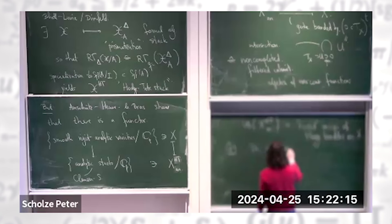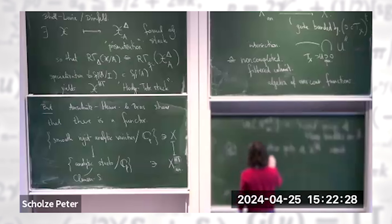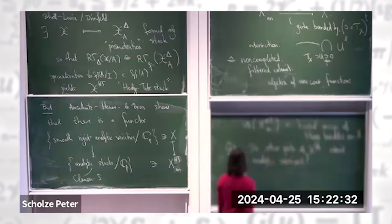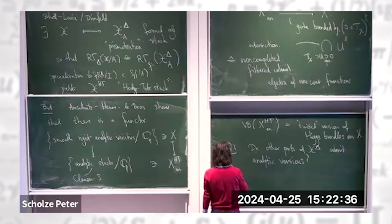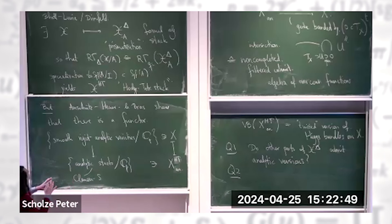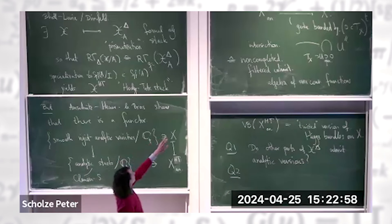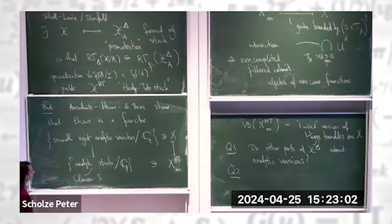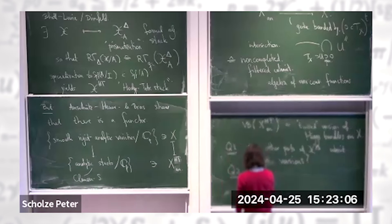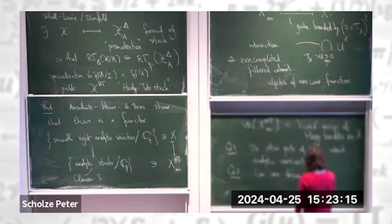Here are some questions. The two other parts — in the formal sense — admit analytic versions. Another question you might ask is: the original construction of the analytic Hodge-Tate stack was pretty indirect, using some kind of deformation perturbation, and then there was a different proposal using some kind of non-completive perfection of the formal prismatization. Really, one would like a moduli description of the Hodge-Tate stack. What is the functor of points of the analytic Hodge-Tate stack? The idea of the picture is that one can define a category of analytic prisms.